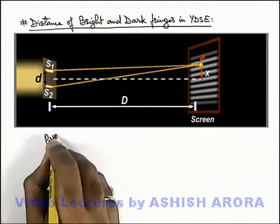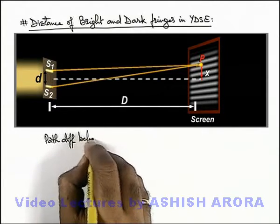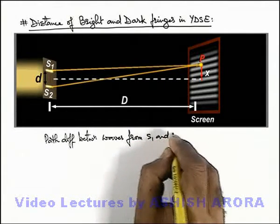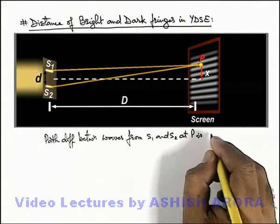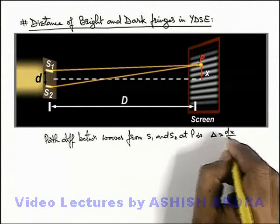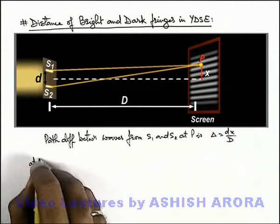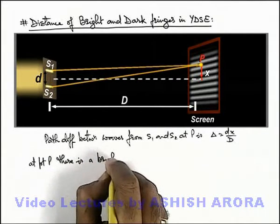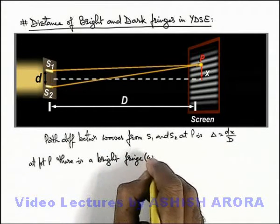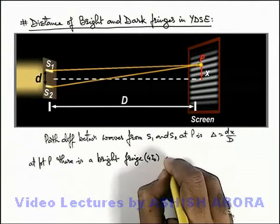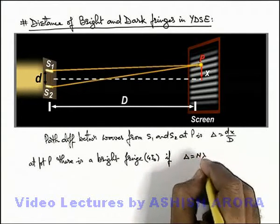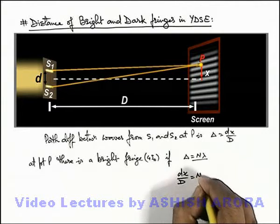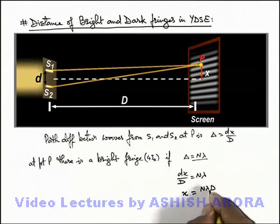We know well that the path difference between waves from S1 and S2 at point P — as studied in the previous section — is given as dx/D. In this situation, at point P there is a bright fringe, which implies its intensity is 4I₀, that is a point of constructive interference, if this path difference delta is equal to nλ. So when dx/D equals nλ, we get the value of x as nλD/d.